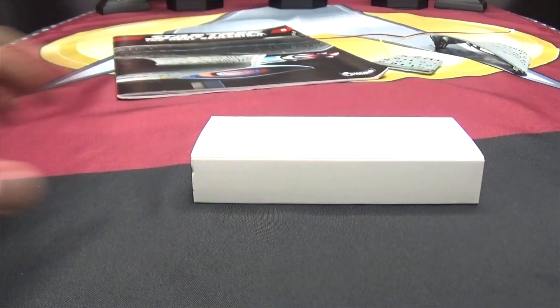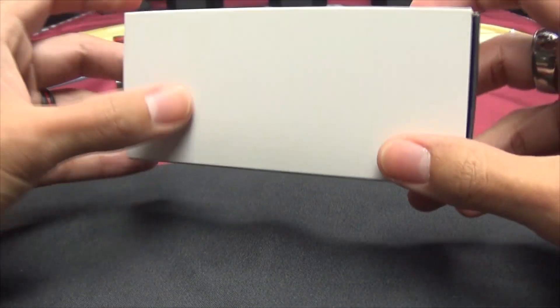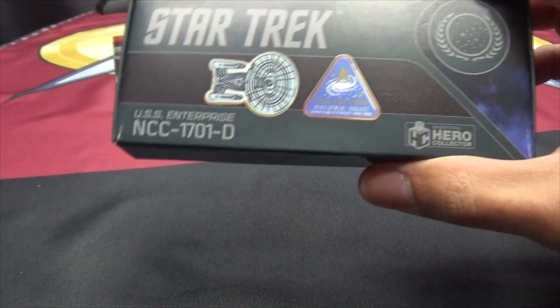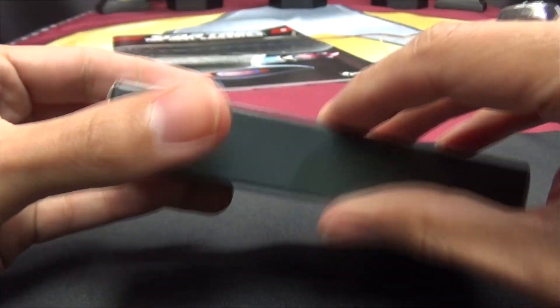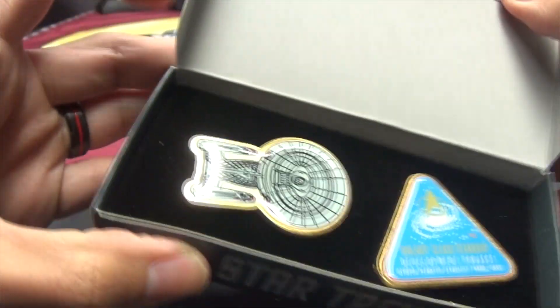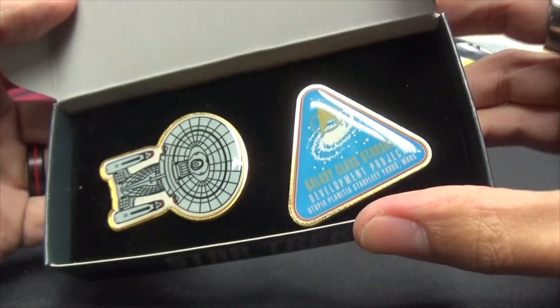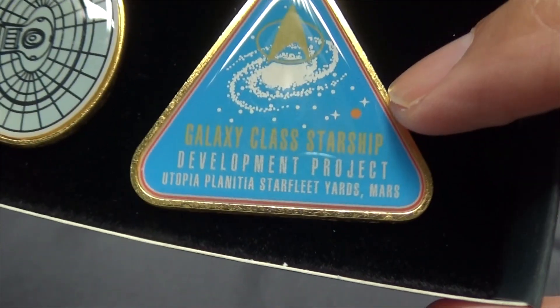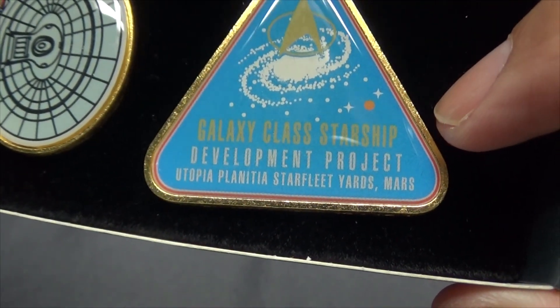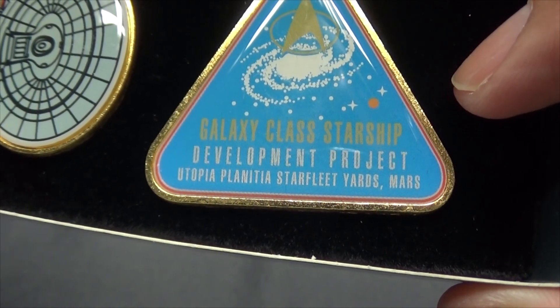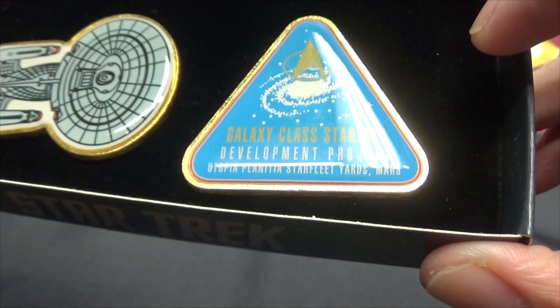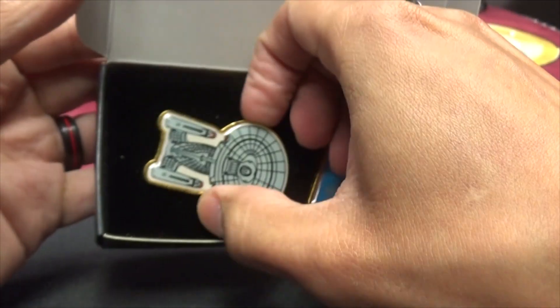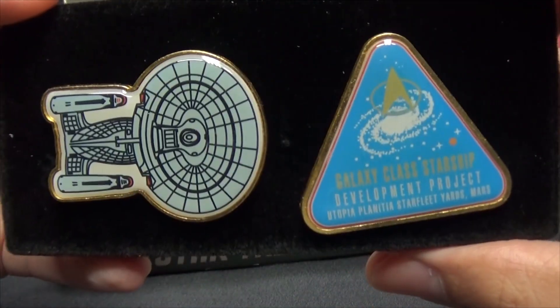Now let's show off the little extra tidbit here. I got this finally. This was supposed to come with the very first shipment but they were sold out, so I had to wait. We got some Star Trek pins. You can see we have a top down view of the Enterprise D, and right here, Galaxy Class Starship Development Project, Utopia Planitia Star Fleet Yards, Mars.